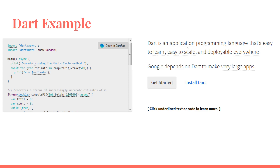Here is some example code pulled from the front page of the site. It calculates pi using the Monte Carlo method. We can see some of the methods and data libraries it provides. There's a main method similar to C-style syntax, a print statement, methods, and data types like var. We also see async in use. Dart is a really nice programming language — it's easy to learn, deployable, and works really well in tandem with JavaScript. You can trans-compile Dart code into JavaScript, which is very handy.